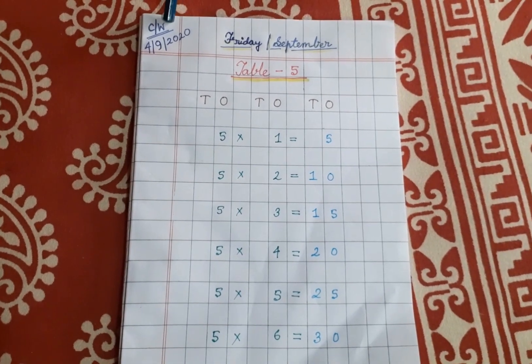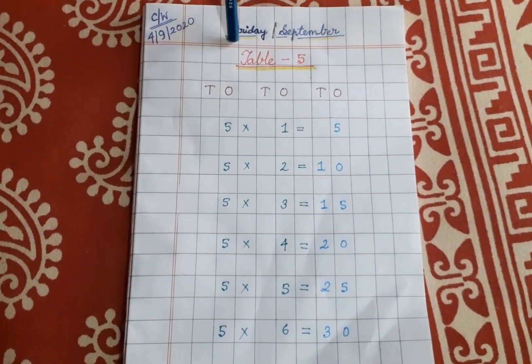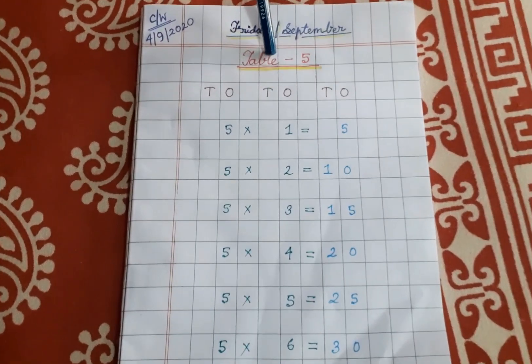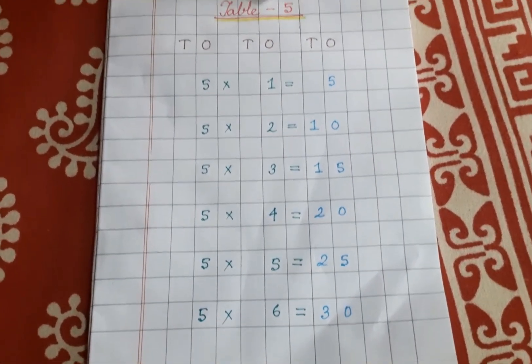Here is the classwork. Write the date - day and month. And here is the heading: T-A-B-L-E, table hyphen 5. Table hyphen 5.